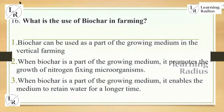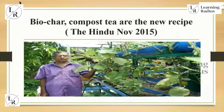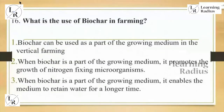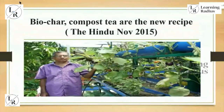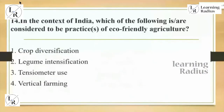The final question is related to biochar — what is the use of biochar in farming? Biochar has been in discussion from 2015 onwards: 'Biochar compost tea are the new recipes.' Biochar is a stable carbon-rich form of charcoal that improves soil condition. Understand that biochar is not purely a current topic — its discussion started from 2015 onwards. You can also see discussions of vertical farming appearing alongside eco-friendly agriculture in the same period.